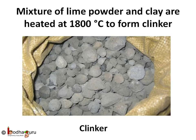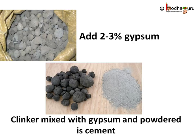This powder is heated in a kiln to 1800 degrees centigrade. A chemical reaction occurs between clay and limestone. The mixture becomes hard and forms many small balls. This is called clinker. Then it is mixed with 2 to 3 percent gypsum and ground to a fine powder. This powder is cement, which is then packed in bags and sent to construction sites.